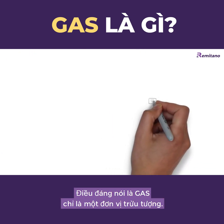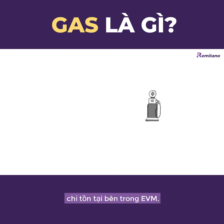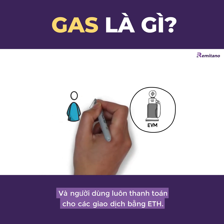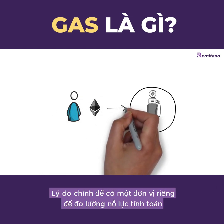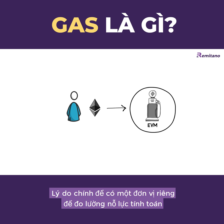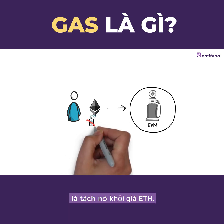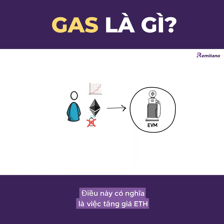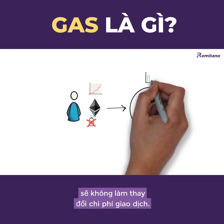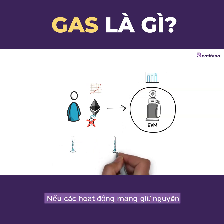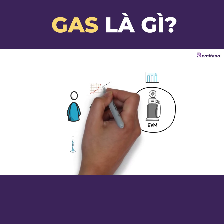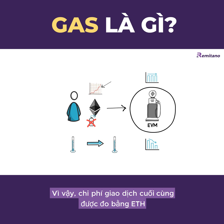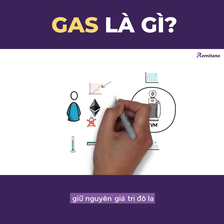It's worth mentioning that gas is only an abstract unit that exists only inside the EVM, and the user always pays for transactions in ETH. The main reason for having a separate unit for measuring computational effort is to decouple it from the price of ETH. This means that an increase in ETH price should not change the cost of transactions — if network activity stays the same and the price goes up, we should see the gas price going down, so the final transaction cost in dollar value stays the same.